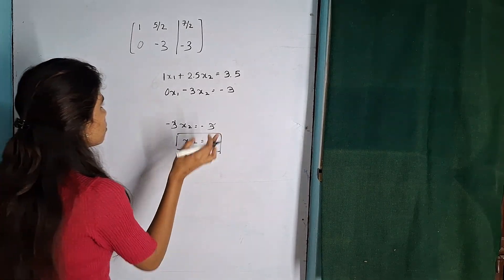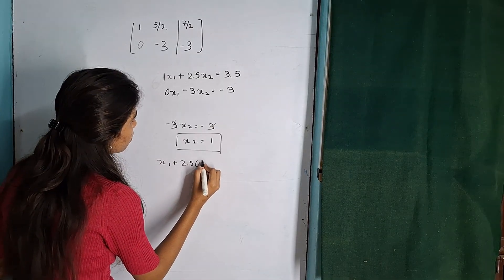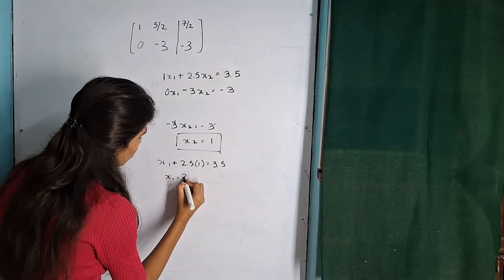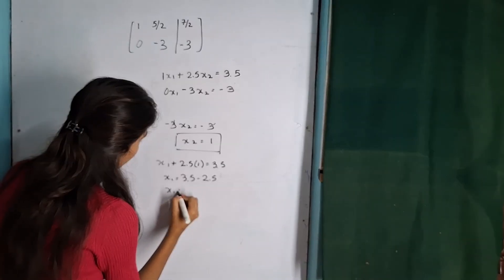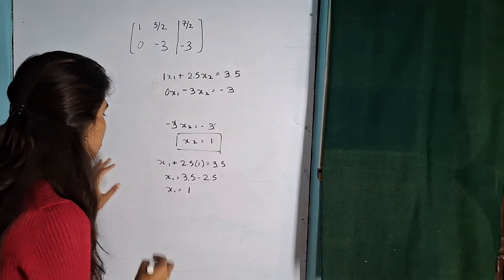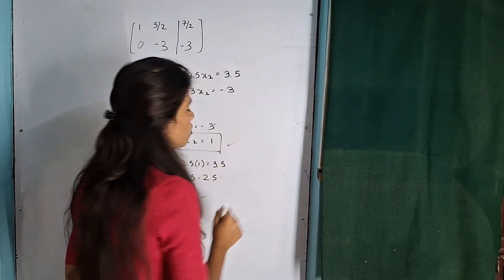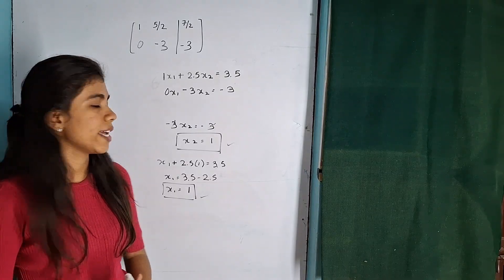And now we will put x2 into the previous equation. x1 plus 2.5 times 1 equals 3.5, so x1 equals 3.5 minus 2.5, x1 equals 1. So your x1 equals 1 and your x2 also equals 1. So finally we found the answers of x1 that is 1 and x2 that is 1.